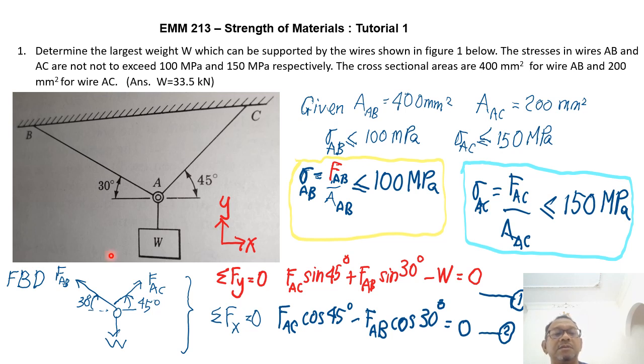In this question, the first question talks about determining the largest weight W which can be supported by the wires shown in figure one below. So I have two wires, AB and AC. AB forms a 30 degrees angle with the horizon and AC forms a 45 degrees angle with the horizon. The stresses in wires AB and AC are not to exceed 100 MPa and 150 MPa respectively.